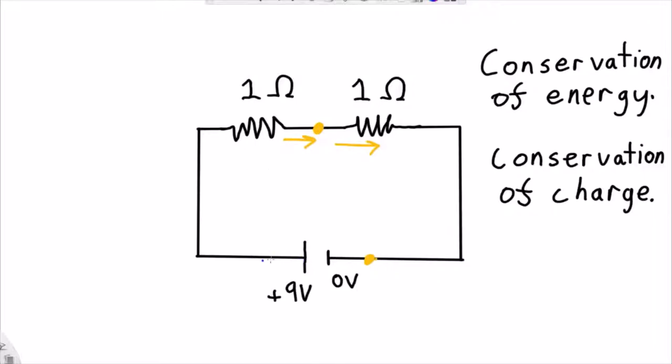So, let's see, what do we know? I've got 9 volts on this side, so that means that at this point here, I must still have 9 volts, and at this point here, I'm at 0 volts.